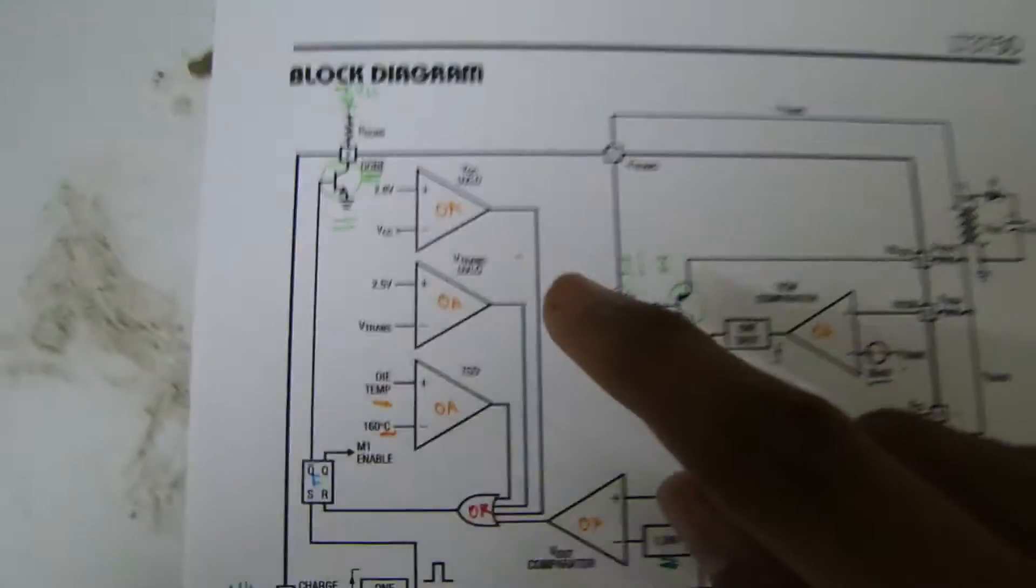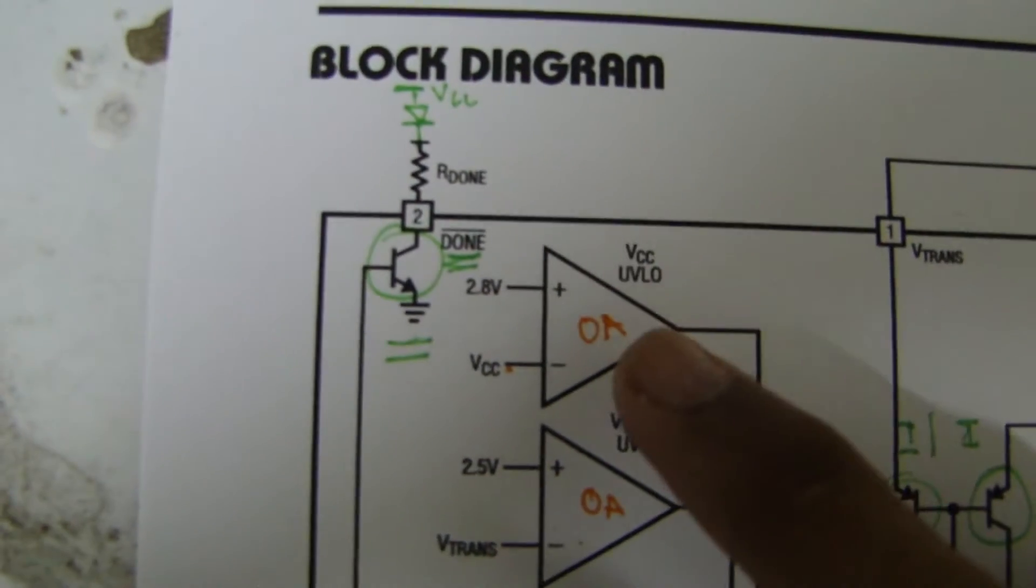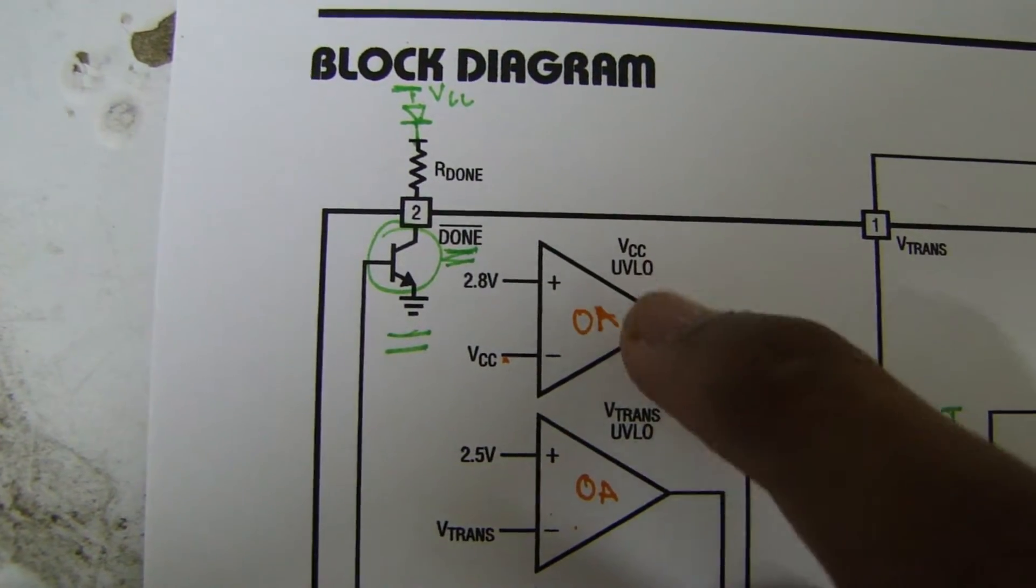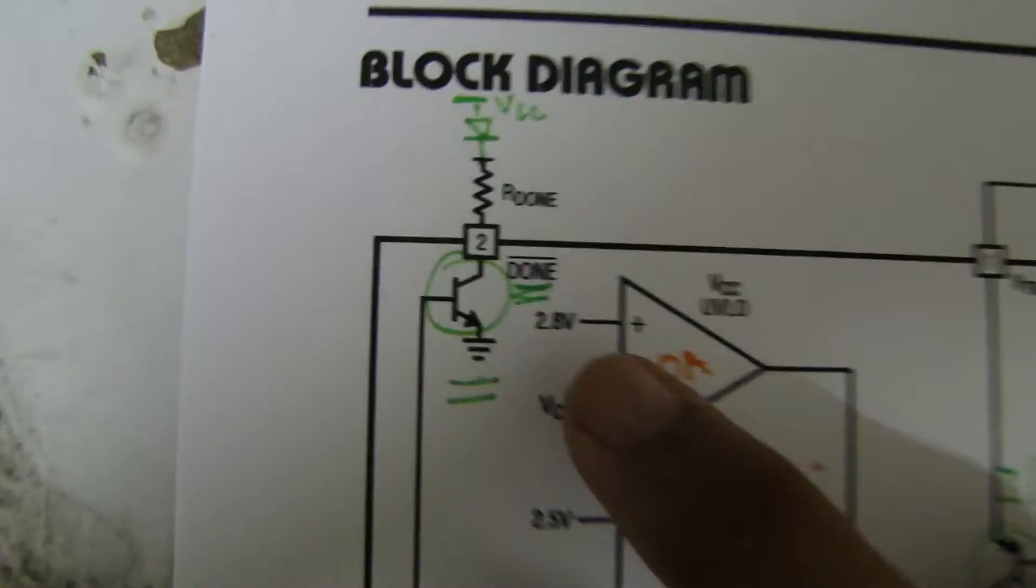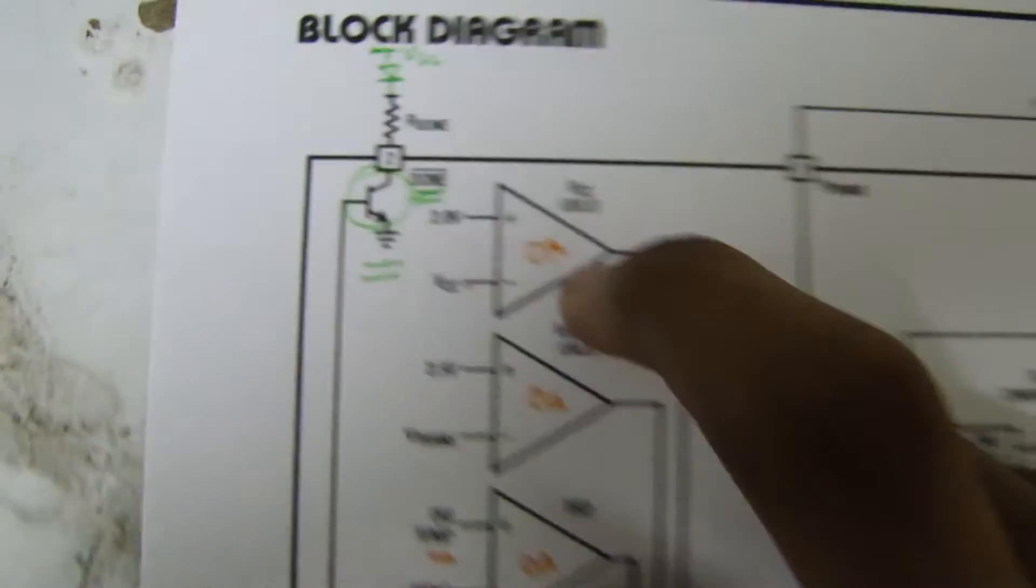So as you can see, there are three op-amps in the initial stage. The first one acts as VCC under voltage cutoff. So if VCC goes below 2.8 volts, it cuts off charging.